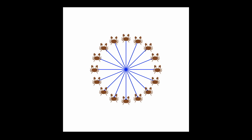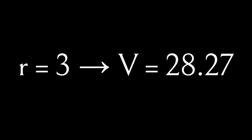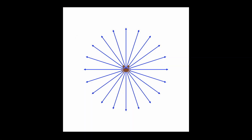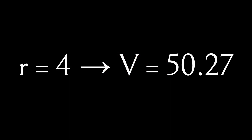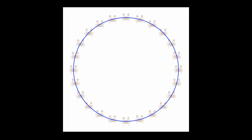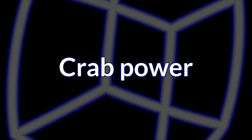What happens if the crab moves three crab lengths in every possible direction? It covers 28.27 crabs worth of space. r equals 3 gives us v equals 28.27. The crab can go on doing this until it reaches the edges of its universe: r equals 4 gives us v equals 50.27, and r equals 5 gives us v equals 78.54. Our crab is mathematically minded, so it comes up with a formula for how much space it covers moving a specific distance in every possible direction.